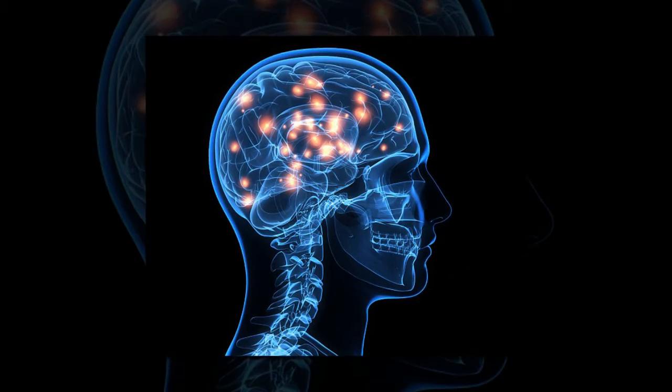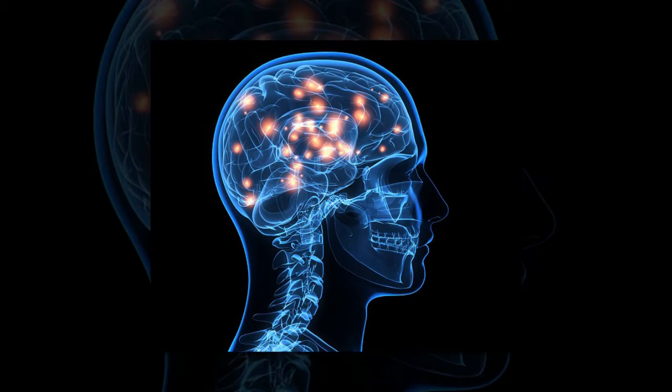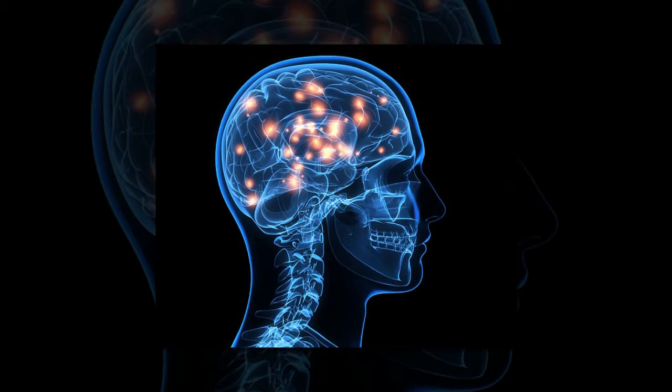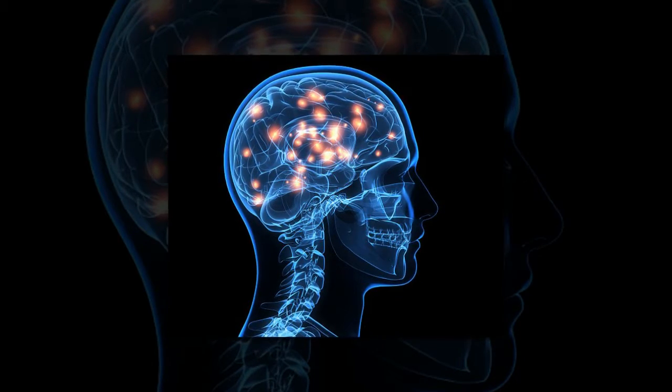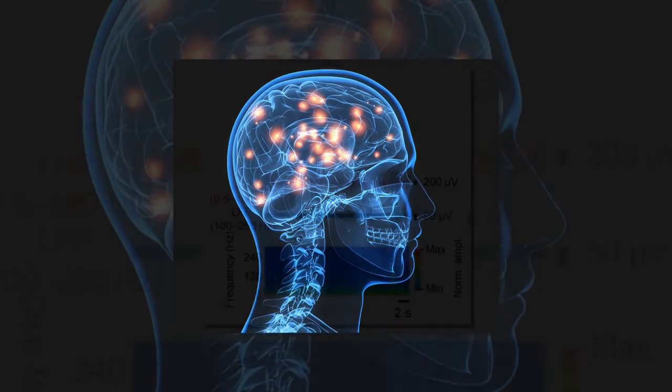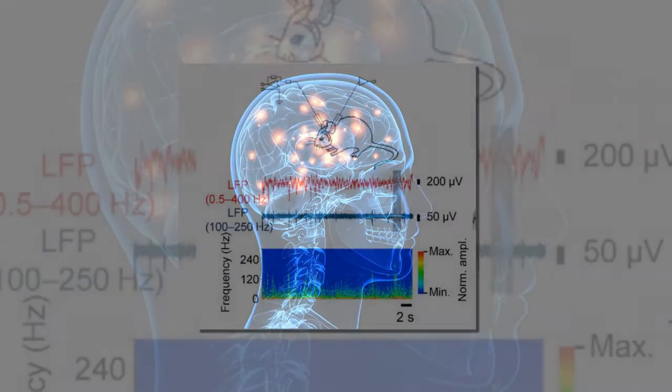The brainwaves linked to stabilizing memories, called sharp wave ripples, help the brain set which you've learned or experienced as a quick instant replay. And the sharp wave ripple is also one of the three major brainwaves that travels out of the hippocampus, the center of memory.